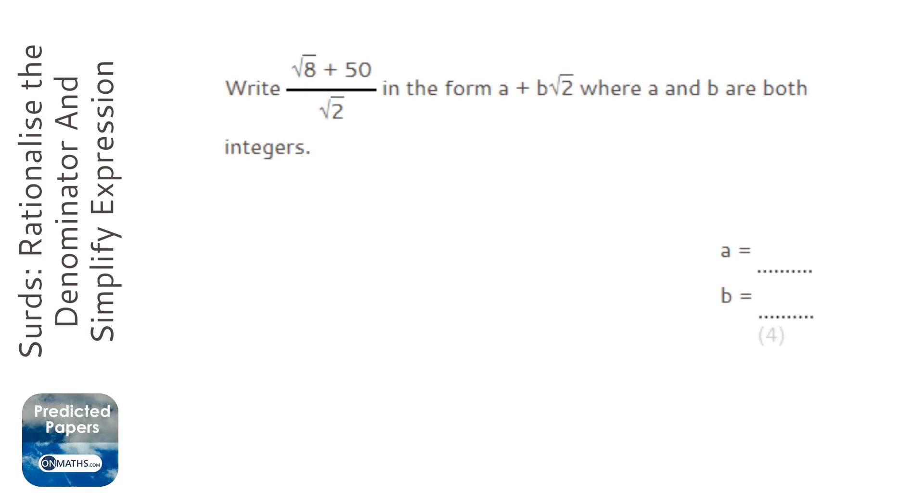Okay, so it asks us to rearrange this into the form a plus b root 2, and we know we're probably going to be having to rationalise the denominator to get rid of it.